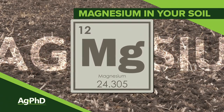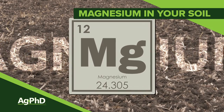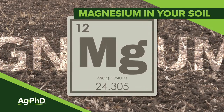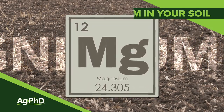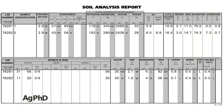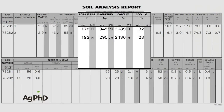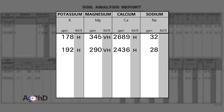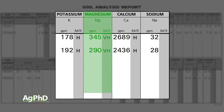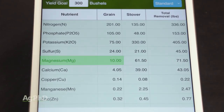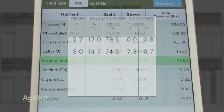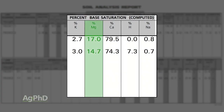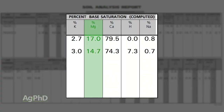One of the things you will look at on your soil test is magnesium. We want you to look at the magnesium parts per million because you have to have enough parts per million or pounds per acre to raise a good crop, and every crop has a chart telling you how much you really need. But the other thing you need to look at is the base saturation magnesium percentage.